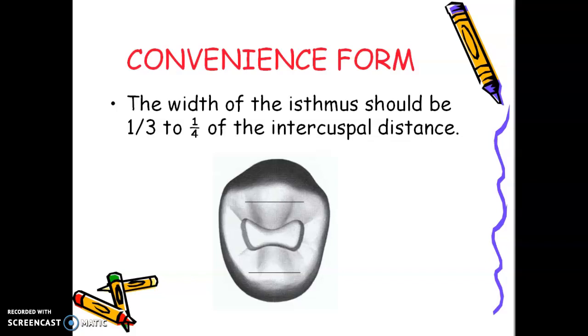So how do you achieve convenience form? The width of the isthmus should be one-third to one-fourth of the intercostal distance. We mentioned proper width of the cavity for resistance form, but for convenience form, the width of the isthmus should be around one-third to one-fourth of the intercostal distance for you to gain access into the cavity.